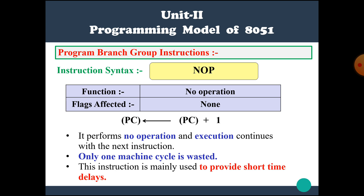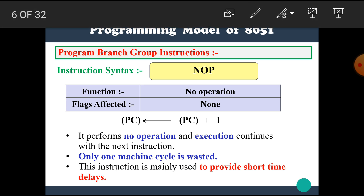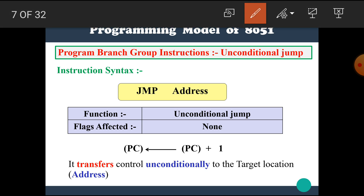The first instruction in the program branch group is no operation. Its syntax is NOP. Its function is no operation — no flags are affected. The PC is incremented by one. It performs no operation and execution continues with the next instruction. Only one machine cycle is wasted. This instruction is mainly used to provide a short time delay.